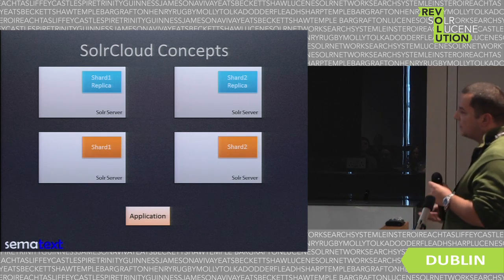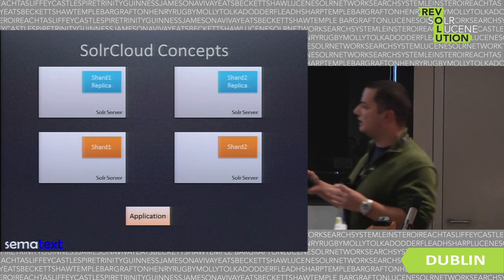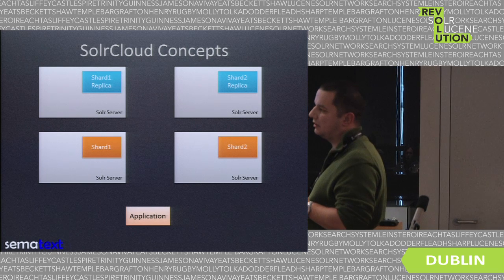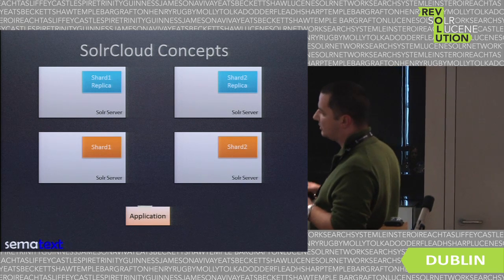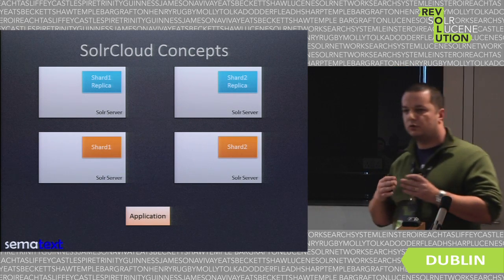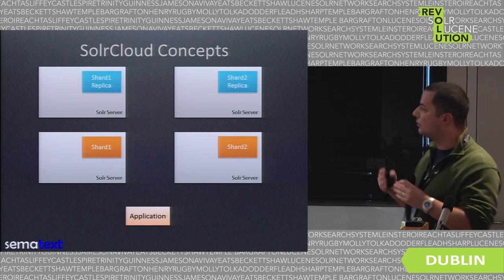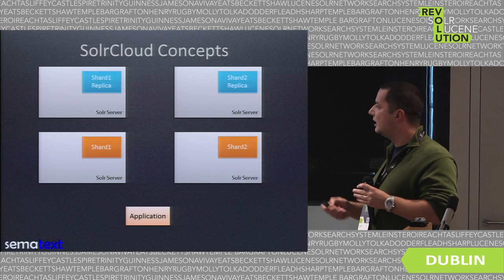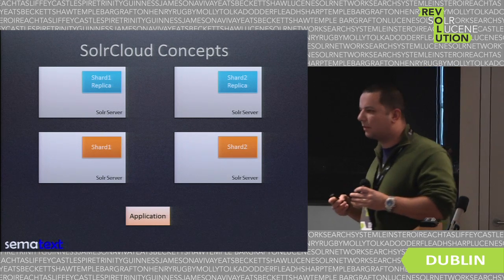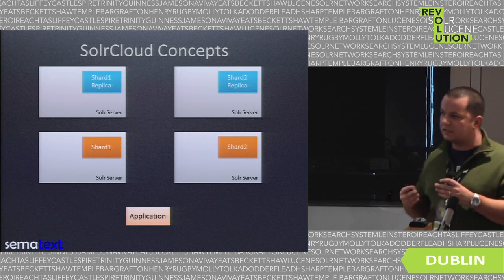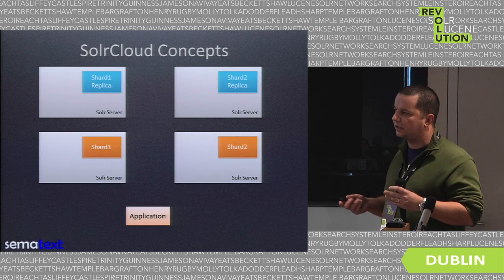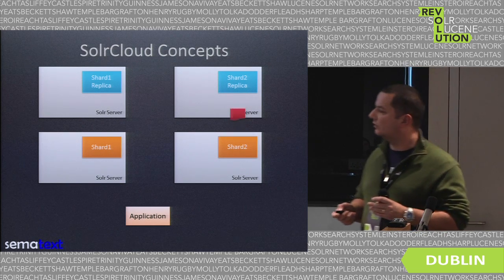The same happens when a second document comes. It doesn't matter to which shard it goes because Solr will automatically route the document to a proper shard and then, of course, it goes to its replicas. You can have multiple replicas, not just a single one.